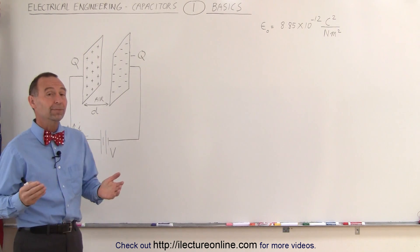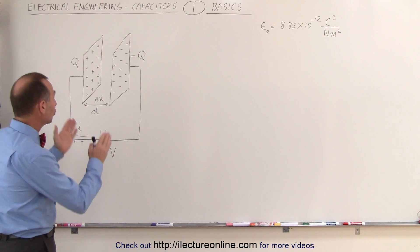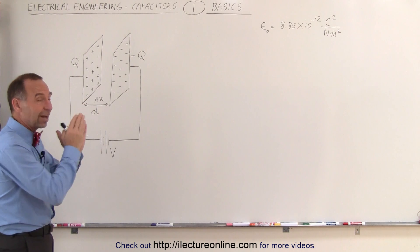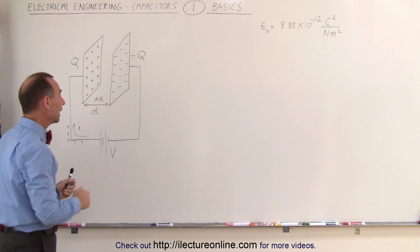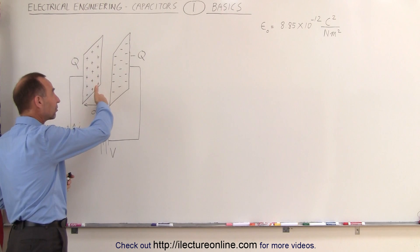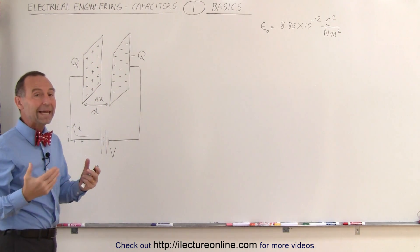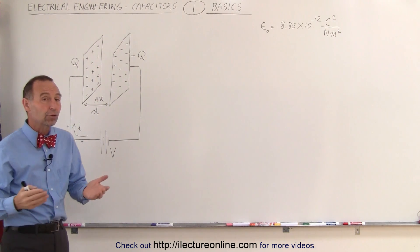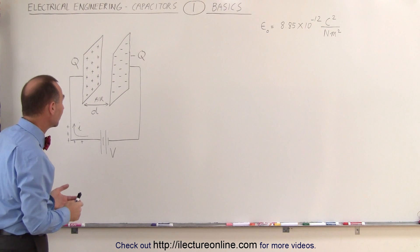What is a capacitor? In simple terms, it's two metal plates that are side by side with a very small distance between them. Typically there's a dielectric between the plates, or it could simply be air between the plates.